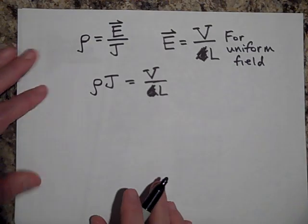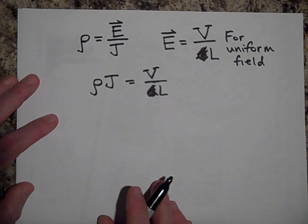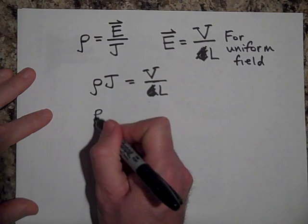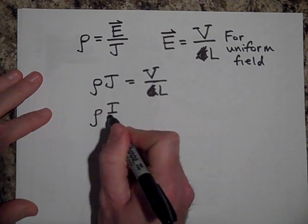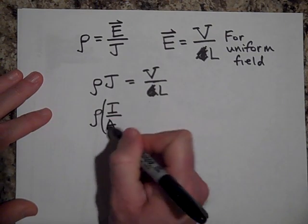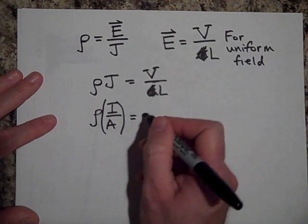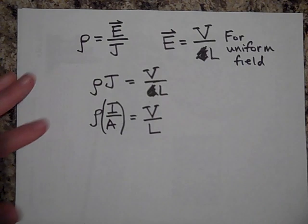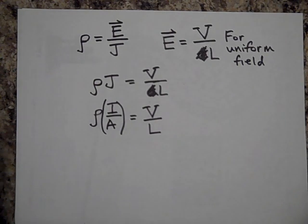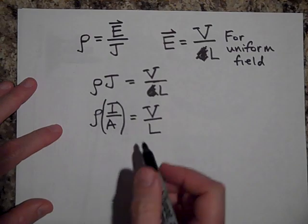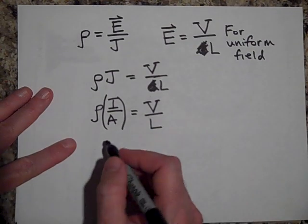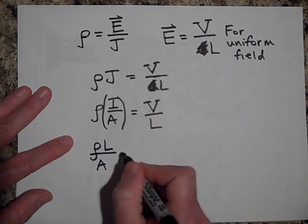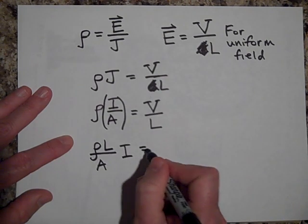But j is I over A. Okay. And so if I bring the L over here, it's going to be ρL over A times I is equal to V.